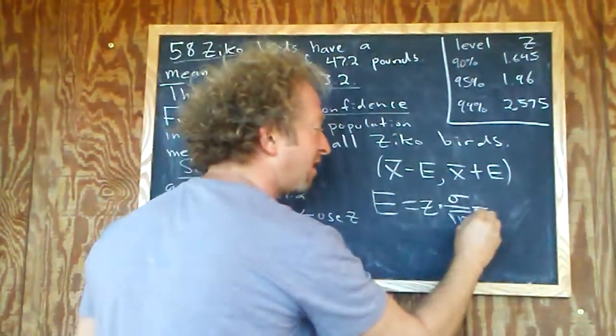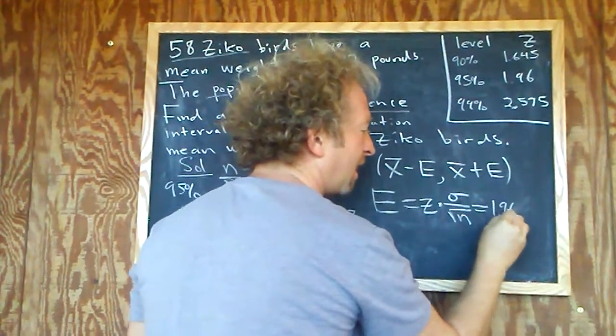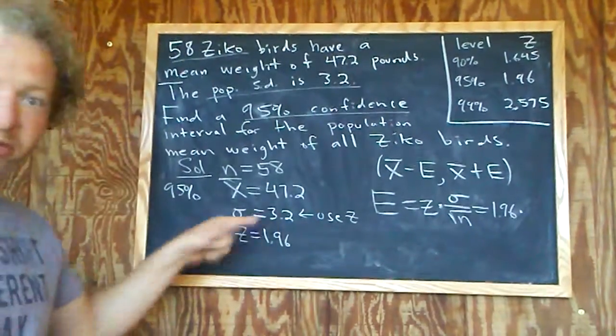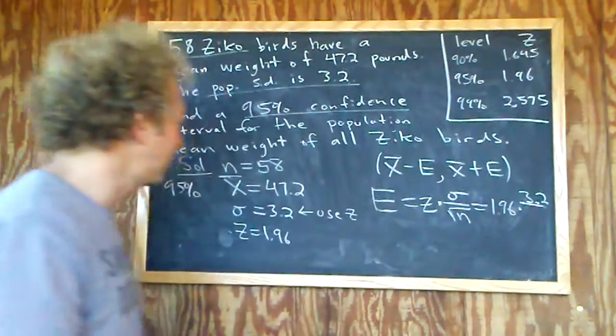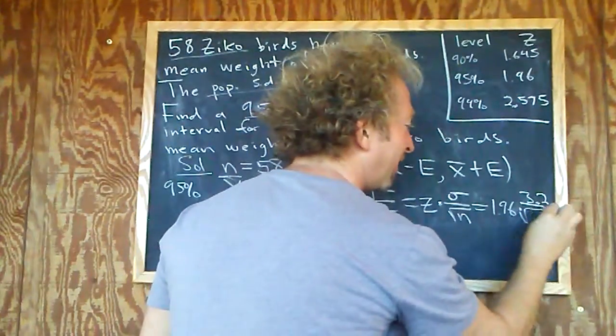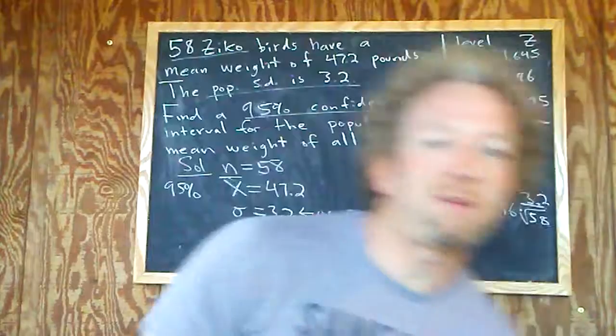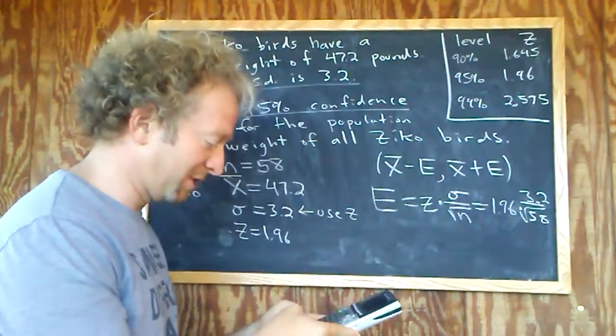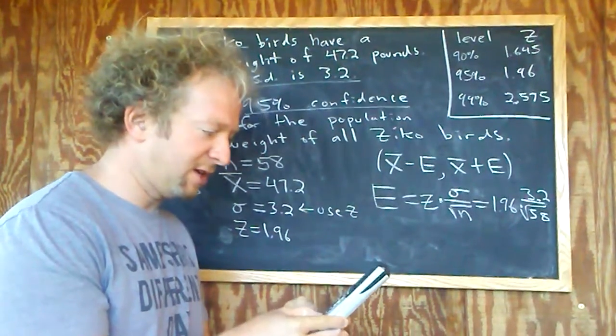Then you just plug everything in. So z here we said was 1.96, sigma is 3.2, and n is 58. I'm glad we wrote it down, it makes it easier. Square root of 58. So plug everything in, go to your calculator. I haven't done this problem, I just made it up right now, I have no idea what the answer is, we'll find out. 1.96 times 3.2 divided by square root of 58.